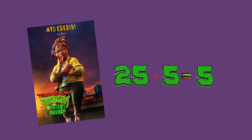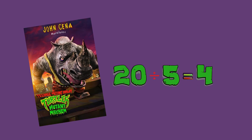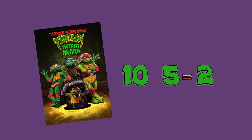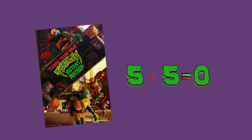25 divided by 5 equals 5. 20 divided by 5 equals 4. 15 divided by 5 equals 3. 10 divided by 5 equals 2. 5 divided by 5 equals 0.